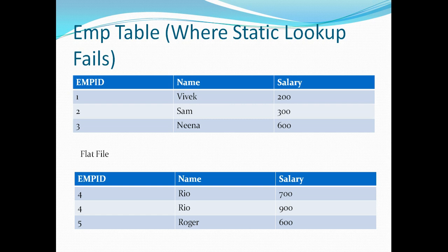If we run this with our conventional static lookup, the cache is built at startup with three rows. When the first row comes in, Rio is treated as a new employee and inserted with salary 700. When the second row for Rio is processed, this is where the problem occurs — Informatica has already built the cache and won't look in the database again. It thinks Rio with employee ID 4 does not exist and tries to insert him again, causing a primary key constraint violation and a process failure.